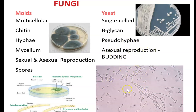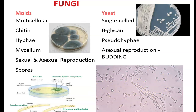When yeast reproduce, they reproduce by budding. There's a bigger cell and then there's a littler one coming off of it — they will eventually separate and become two separate cells. Seeing budding helps us to identify these cells as yeast instead of red cells when we're looking in urines and things like that.